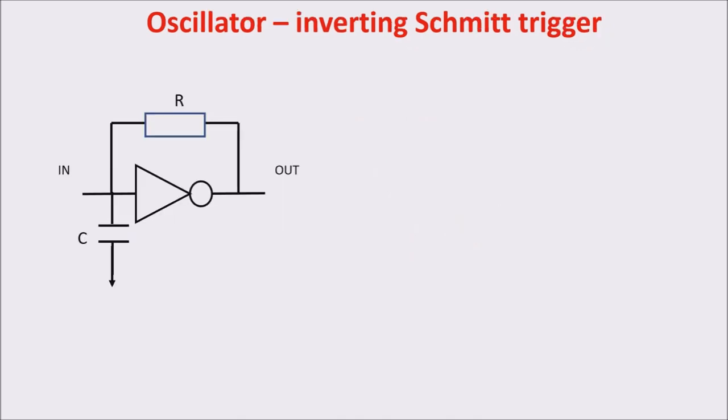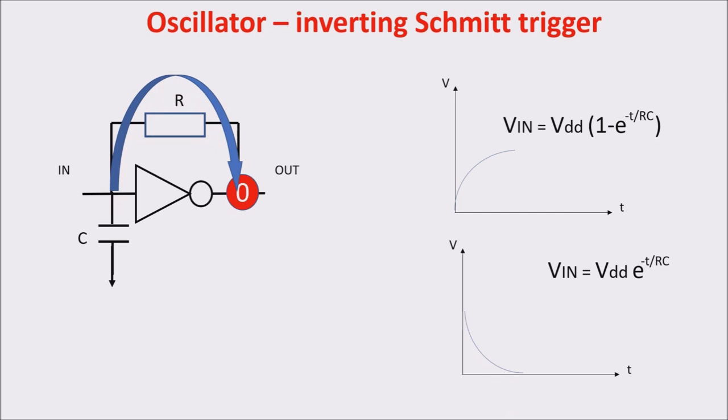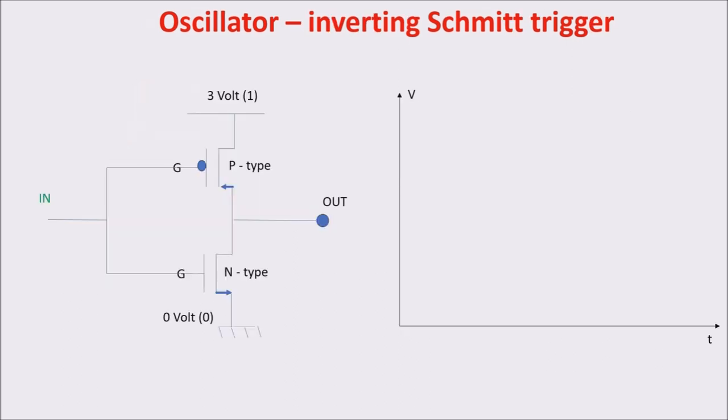Let's see how the input voltage moves, led by the output. If we start with the capacitor discharged, there is a 1 on the output. This voltage starts to charge the capacitor following the typical exponential law. At some point, the input voltage reaches the threshold voltage of the N-type transistor, switching it ON and changing the output to zero. So, the capacitor starts to discharge itself through the resistor and the N-type transistor to the ground, following an exponential law as well.